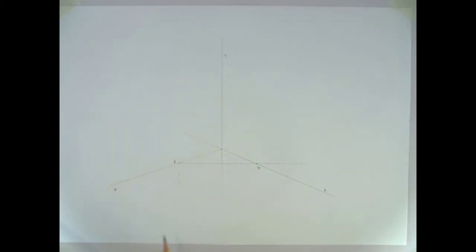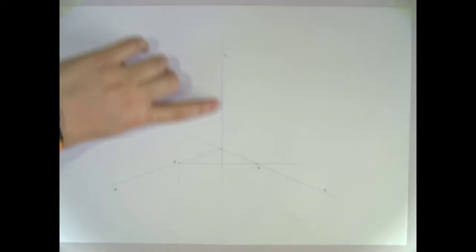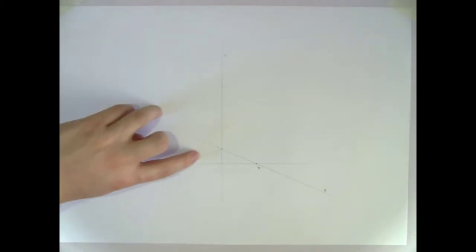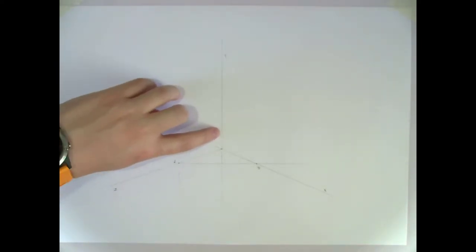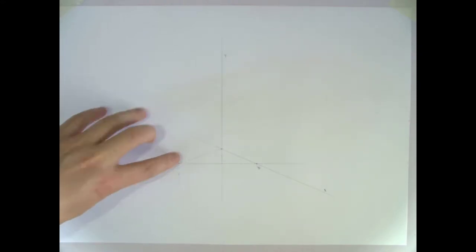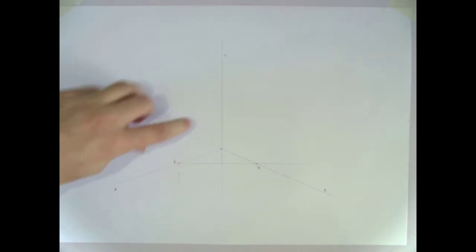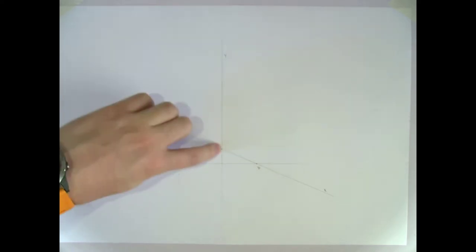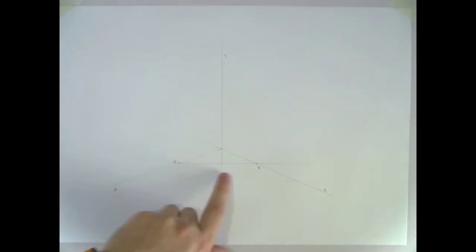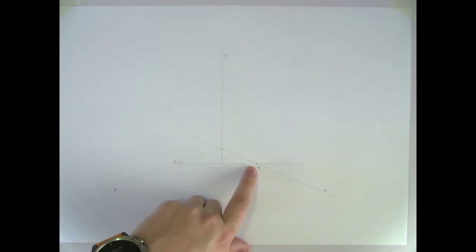Just to recap on that again: draw your vertical axis first, measure the angle of 110 degrees, locate point A which is 50mm out from the Y axis, and point B is 90mm horizontal from A.